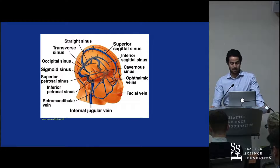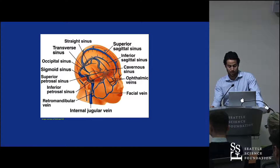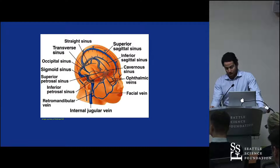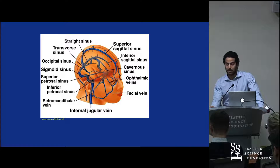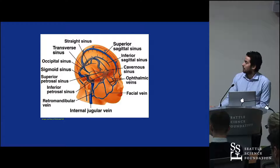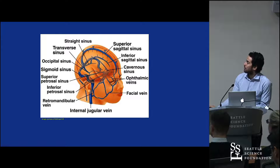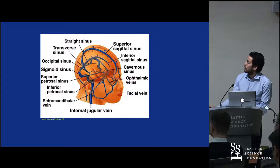Last but not least of the unpaired sinuses is the straight sinus, which runs between the junction of the falx and the tentorium towards the confluence of the sinuses. It is formed by the junction of the vein of Galen and the inferior sagittal sinus.